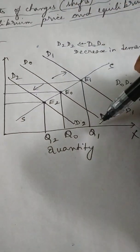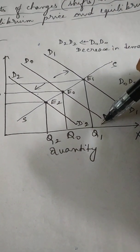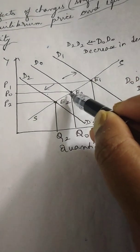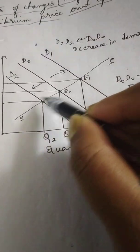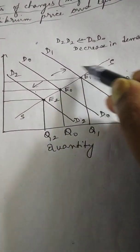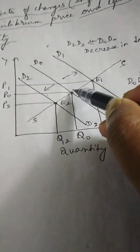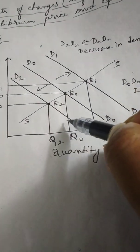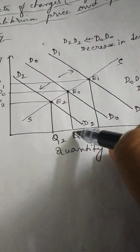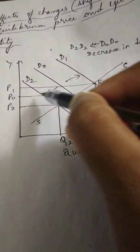Let D0, D0 be the initial demand curve. The initial equilibrium, that is the point of intersection between the supply curve and demand curve, is E0. The initial equilibrium quantity is Q0 and equilibrium price is P0.